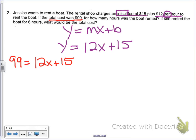So it's going to ask us, how many hours does the boat rent? Again, hours would be x. So we're going to find out what x equals this time. So in order to solve, we've got to subtract 15 from both sides. And that's going to give us 84 equals 12x. Divide by 12. And we're going to get an answer of 7 equals x.